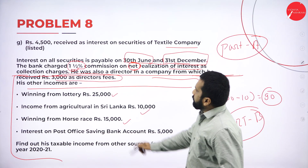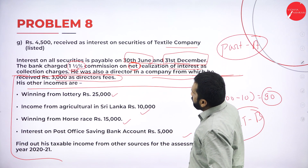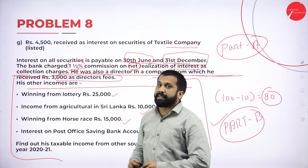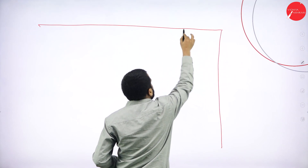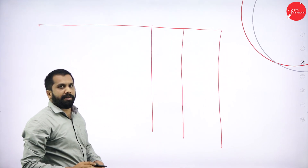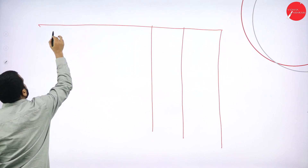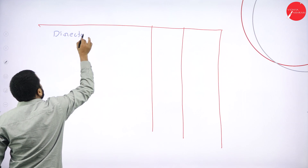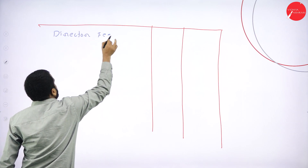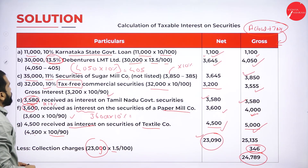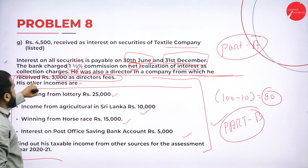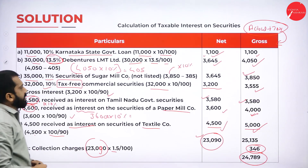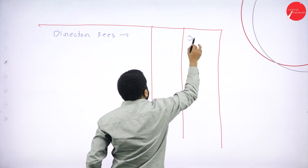Now for the continuation — Part B. He is a director in a company from which he received rupees 3,000 as director fees. For director fees, gross and net calculation is not required. Director fees: take it directly as 3,000.